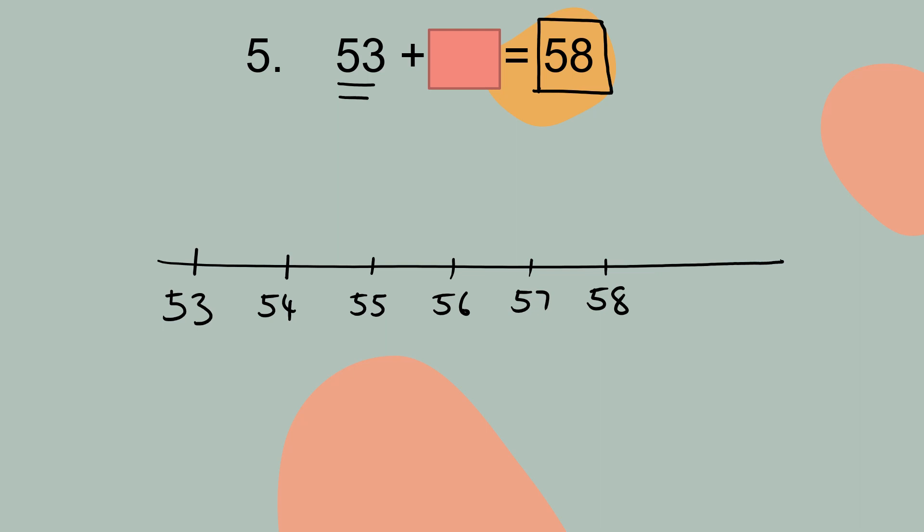Start from 53: 1, 2, 3, 4, 5, until 58. So this will have 1, 2, 3, 4, 5. So your answer is 5. 53 plus 5 equal to 58.